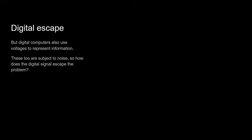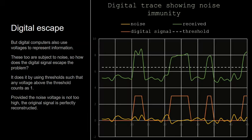Now digital computers also use analogue voltages. So how do they escape from this? You have a voltage running from 0 to 3.3 volts, for example, in most CPUs. And these too must be subject to noise. So how does the digital system avoid the noise that killed analogue computation? Well, it does it by thresholding. It treats any voltage above a given threshold as a 1. And so long as the noise doesn't push things above or below that threshold, you're OK.